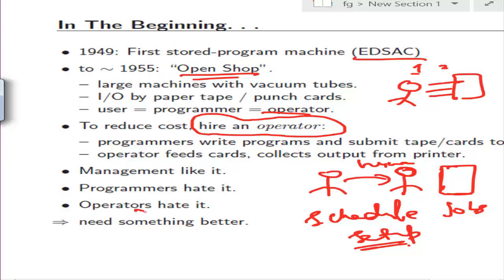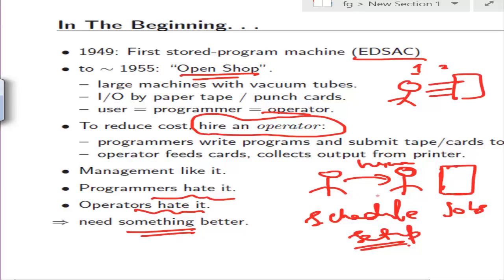This was not efficient — operators and programmers both struggled. We needed to do something better. With scheduling, you were given a fixed time to execute a job — say half an hour or one hour — but maybe the program finishes in 45 minutes out of an hour, so 15 minutes are wasted. Or you might need more time than you're given. So scheduling was a kind of problem.